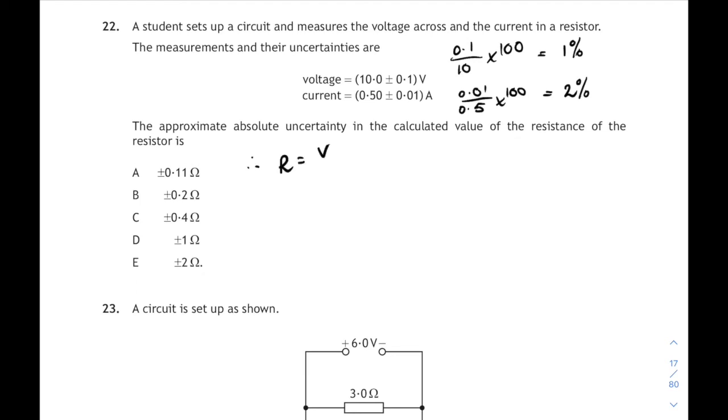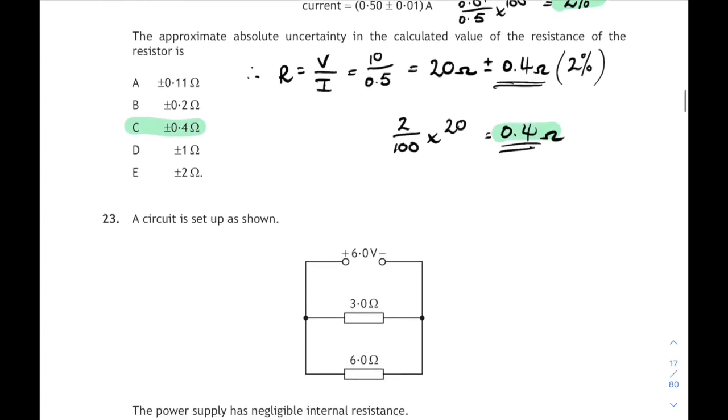Let's calculate the resistance. From Ohm's law, R equals V over I. The voltage was 10, the current was 0.5. 10 over 0.5 is 20. So that's 20 Ohms. But that 20 Ohms is going to have an uncertainty in it of 2%. So what's 2% of 20? Just very quickly, 2 divided by 100 times 20 is 0.4, plus or minus 0.4. That's 22C.